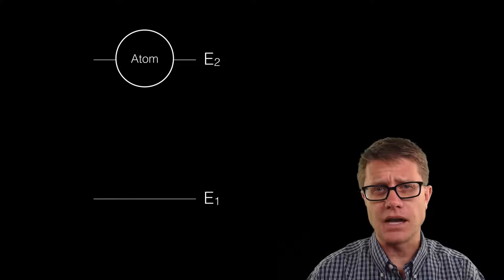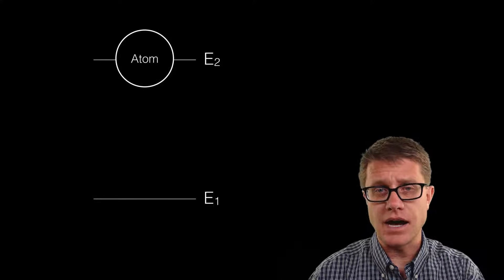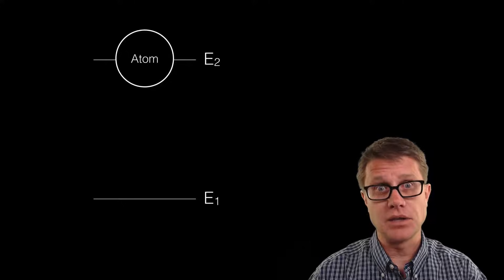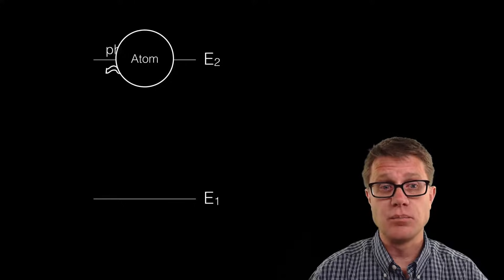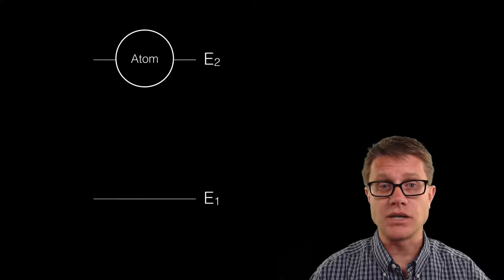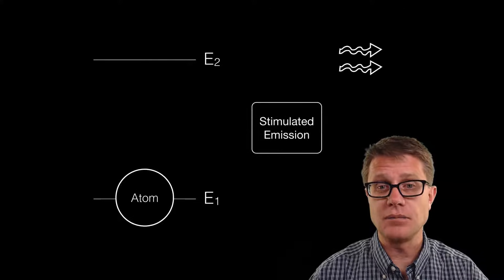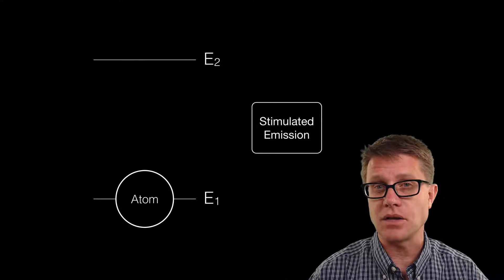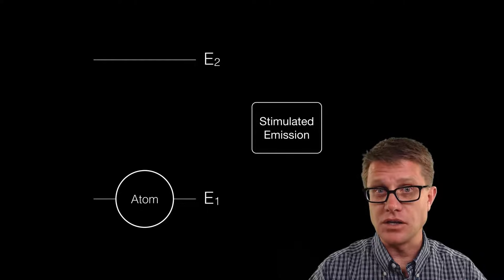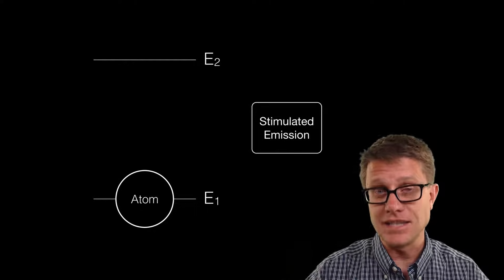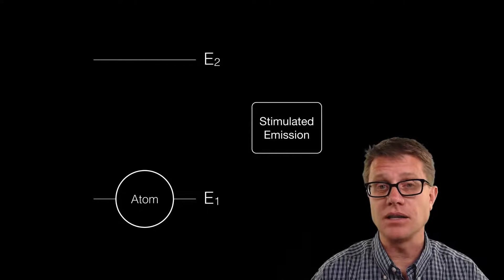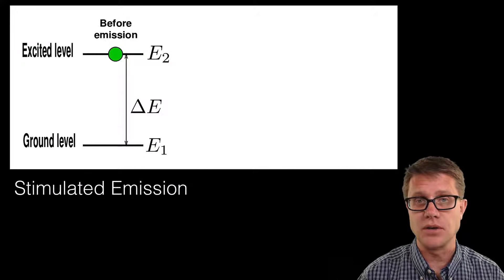But what would happen if the atom has already been stimulated? It is at a higher energy level and it gets stimulated again. So instead of moving to an even higher energy level, watch what happens. One photon comes in and in stimulated emission two photons come out. The energy is used to create an identical photon. We call it stimulated because it was hit by another photon.